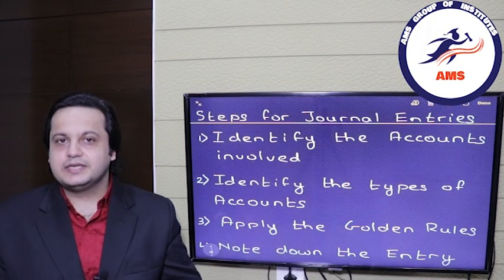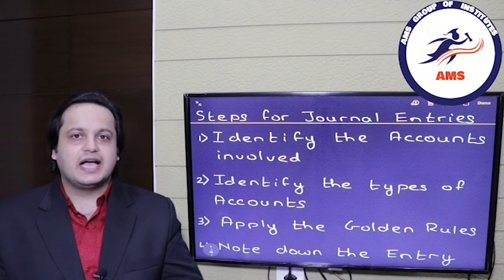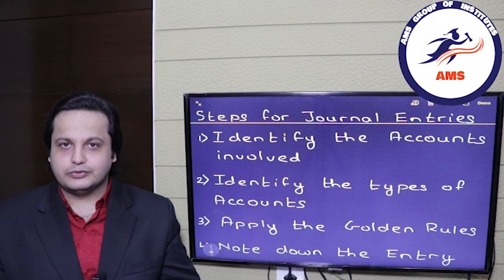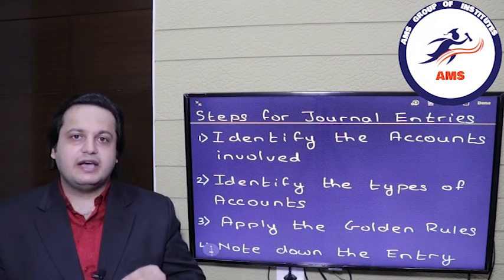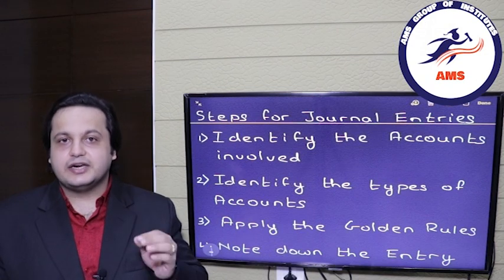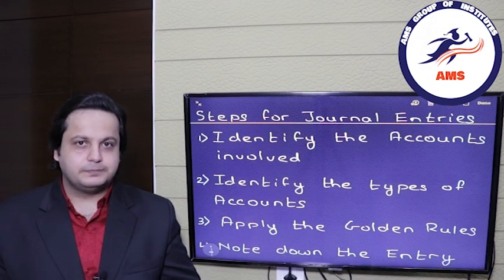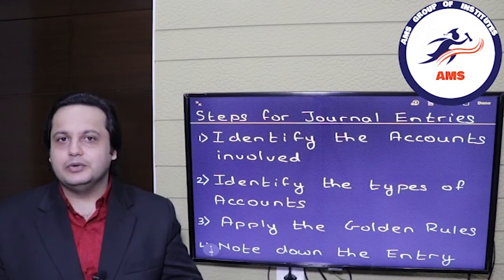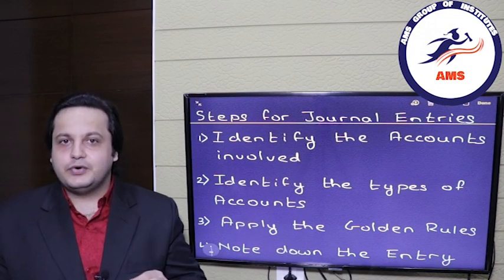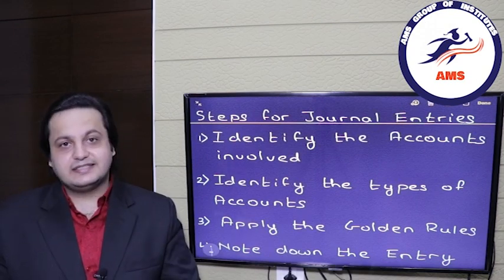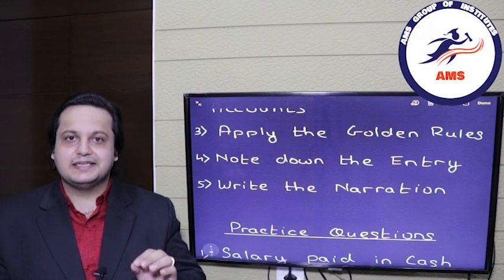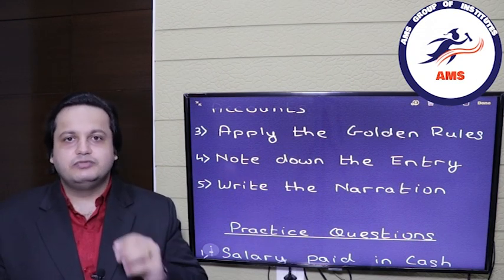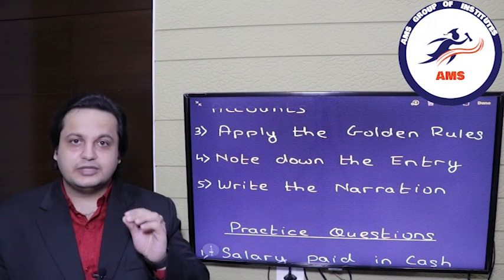Here are the steps. Step one: identify the accounts involved in the transaction. Step two: find out the nature of these accounts — is it a real account, personal account, or a nominal account. Step three: depending upon the type of account, apply the golden rules. Step four: create your journal entry. Step five, the most important: create the narration. Narration is just a description of the transaction, so make sure you do the narration as well.